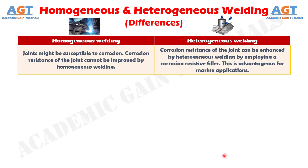Difference number 6: Joints might be susceptible to corrosion, and corrosion resistance of the joint cannot be improved by homogeneous welding, whereas corrosion resistance of the joint can be enhanced by heterogeneous welding by employing a corrosion-resistive filler. This is advantageous for marine applications.